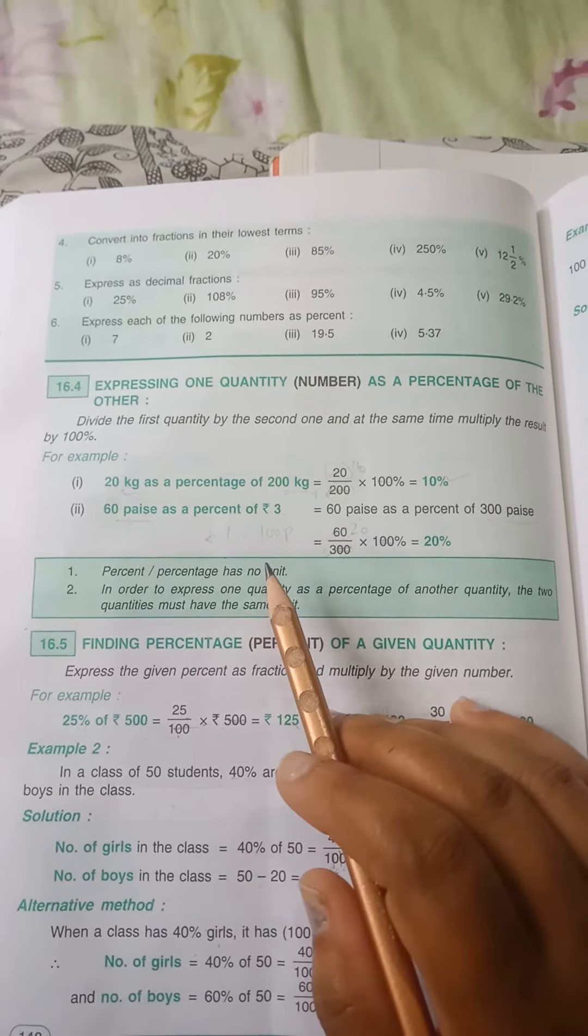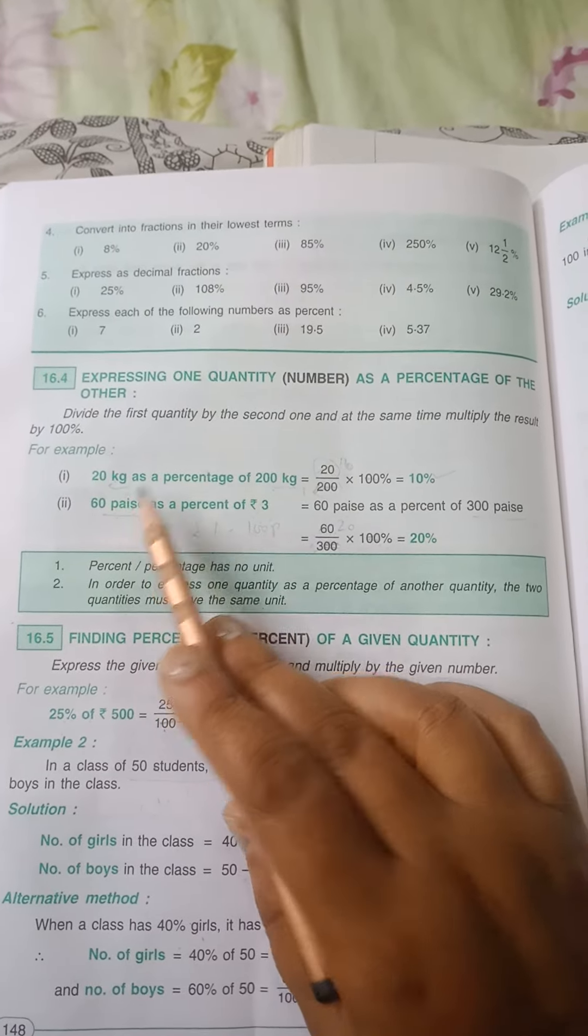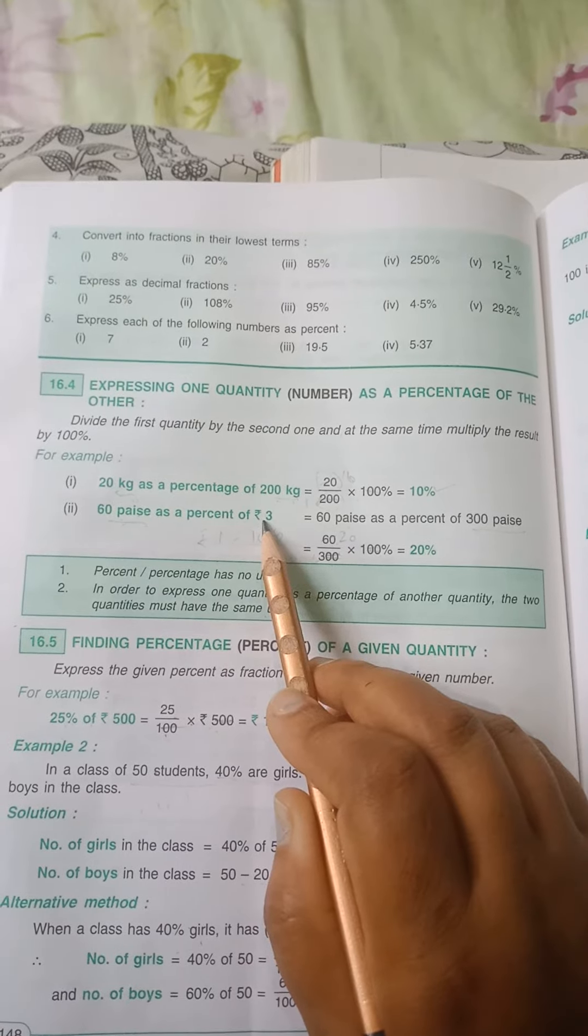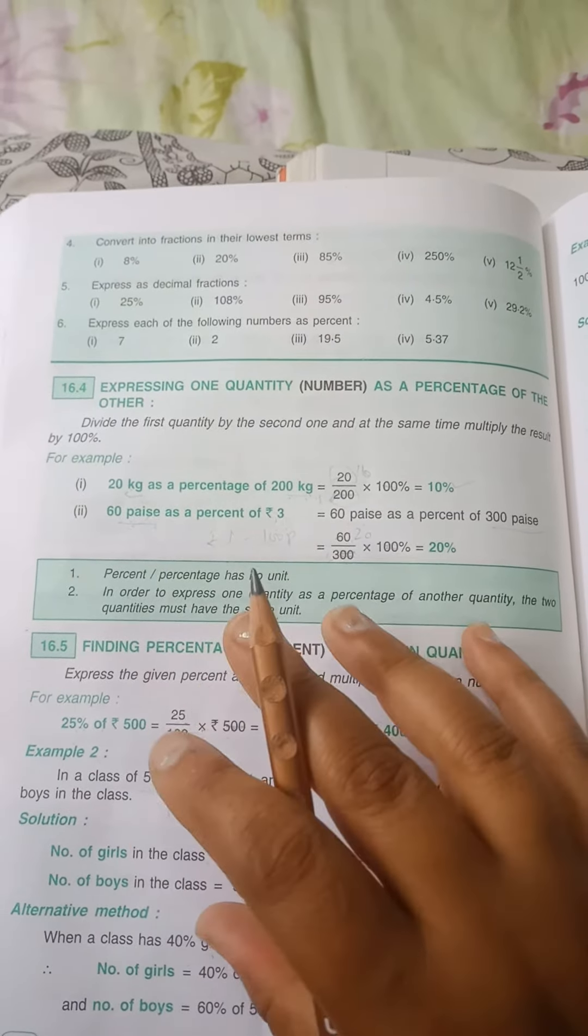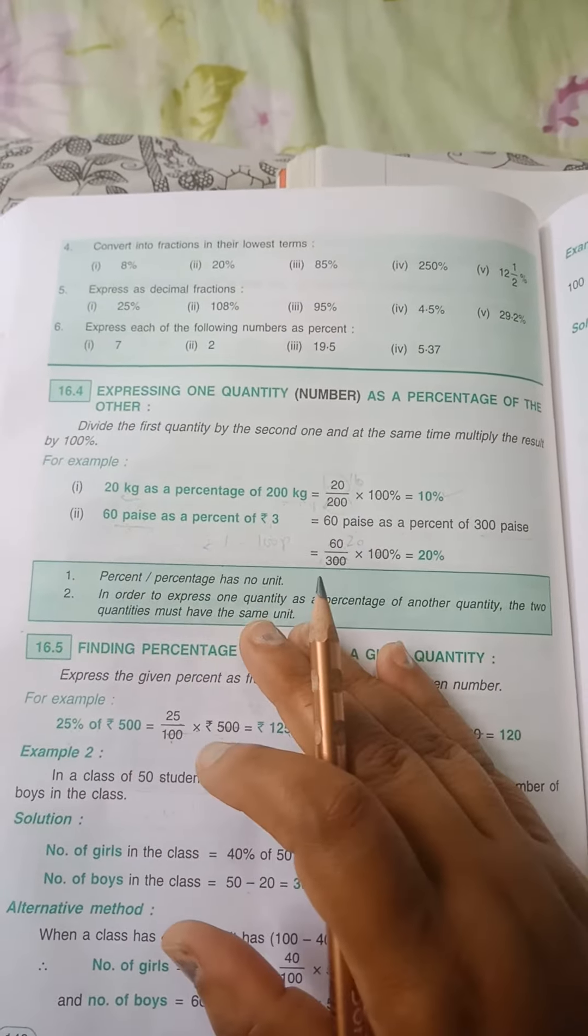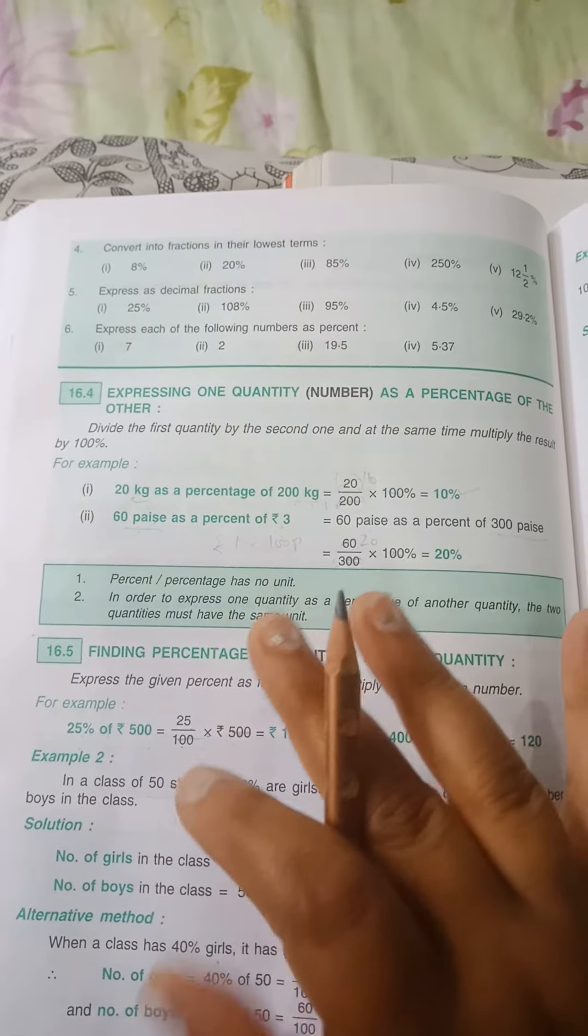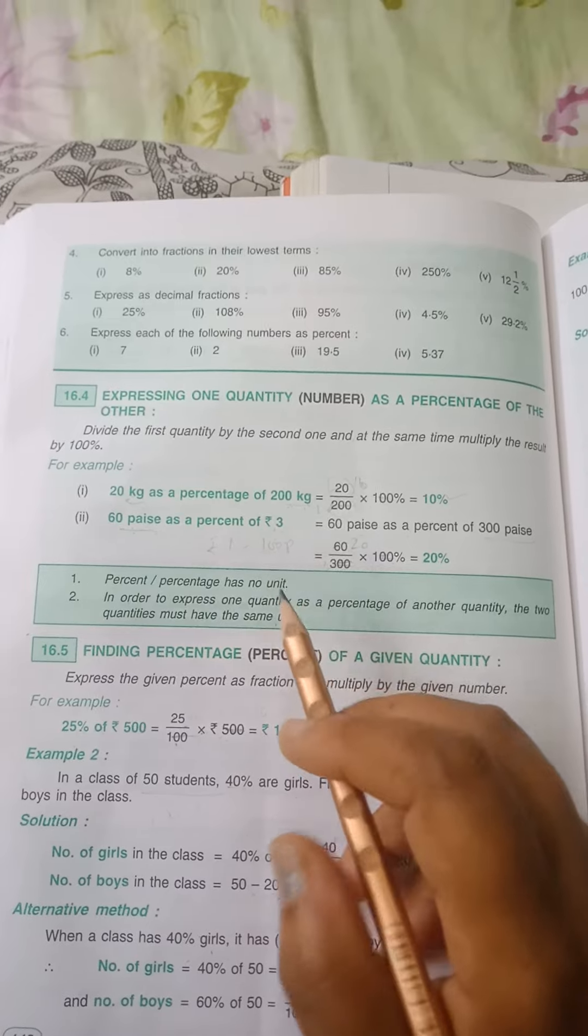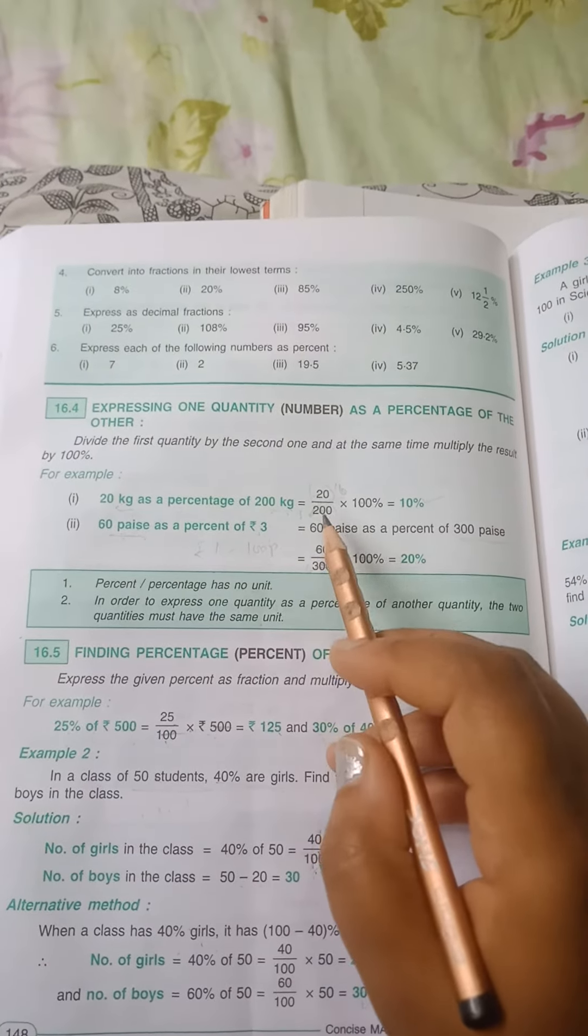Suppose if it is in kg then this should also be in kg. If it is in paise then this should also be in paise. And if the quantities are given different then you will change them, you will make them one. If it is in meters, this has to be in meters.